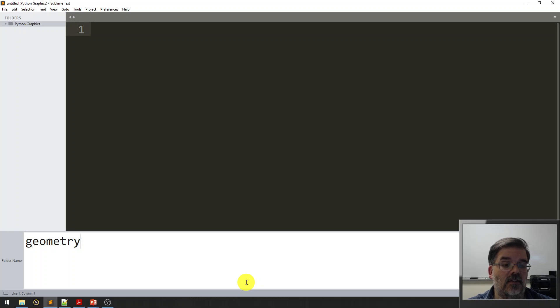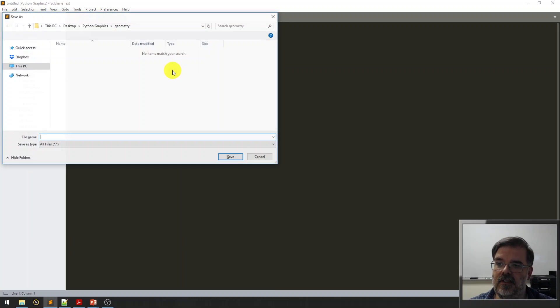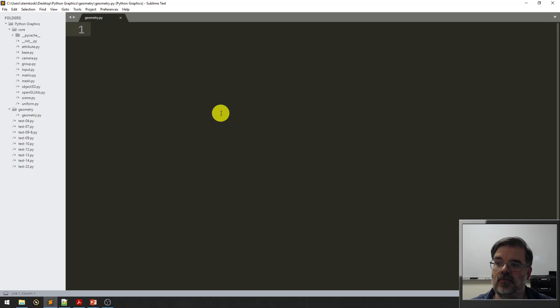Within the Python graphics folder, we're actually going to create a new subfolder. And we're going to call it geometry. This will contain the geometry base class and all the other extensions of the geometry class that we'll need. Right now, the geometry folder is empty. If I right-click, I'm going to make the first file. I'll immediately save that. And we'll just call it geometry.py because this is going to be our base geometry class.